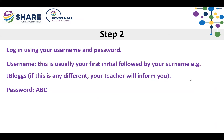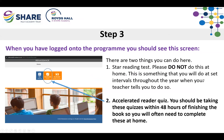The username is usually their first initial and then their surname, or their first initial and the first four letters of their surname — so it will be one of the two. Your child will have this in their planner, and the password for everybody using Accelerated Reader is ABC. It's the same for everybody. When they've logged on, they'll see the main program screen.